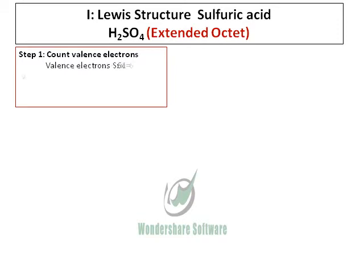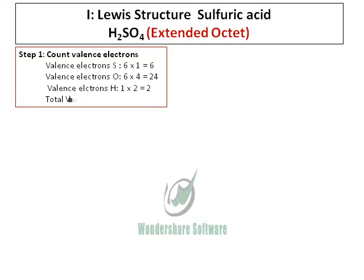We have one sulfur with six electrons, four oxygens with 24 electrons, and two hydrogens with two electrons. So we have a total of 32 valence electrons.